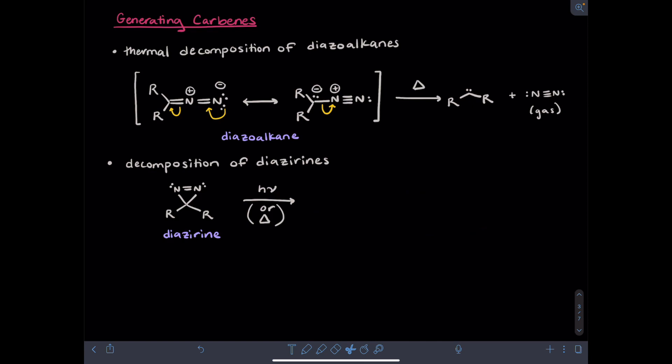A related strategy for generating carbenes is decomposition of diazerines. These feature a carbon-nitrogen-nitrogen three-membered ring where there is a pi bond between the nitrogens. Diazerines can be decomposed by either light or heat. The decomposition results in generation of dinitrogen with a nitrogen-nitrogen triple bond, which is a gas, and they also generate the carbene.